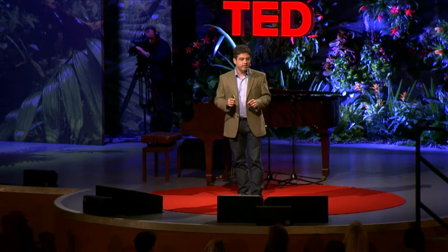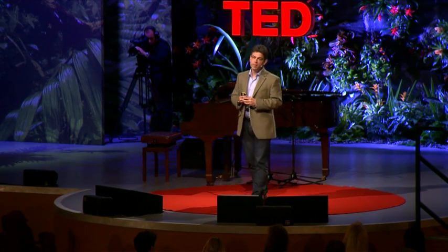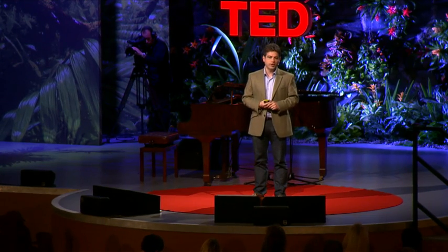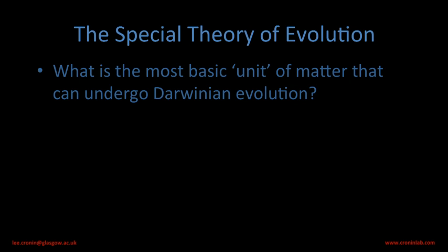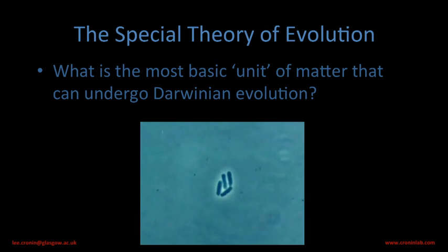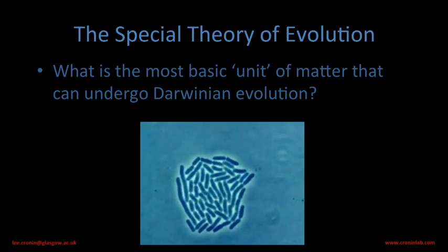Forget about evolution in a metaphysical way. Think about evolution in terms of offspring competing, and some winning. So bearing that in mind, as a chemist, I wanted to ask myself the question — frustrated by biology — what is the minimal unit of matter that can undergo Darwinian evolution? And this seems quite a profound question. Then suddenly I realized that biology gave us the answer: the smallest unit of matter that can evolve independently is in fact a single cell, a bacteria.